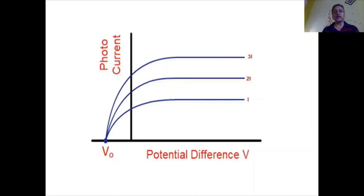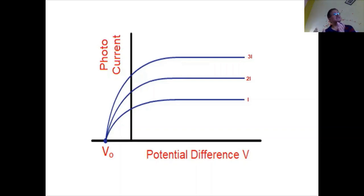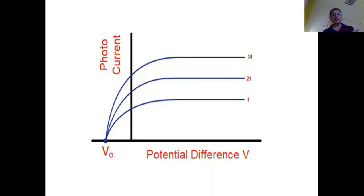Here is a graph between photocurrent and potential difference. Initially, even if the potential difference is zero, there is some photocurrent present. This is because when electrons are ejected from the metal surface, some electrons may have T maximum sufficiently large — that is, h nu minus h nu naught is large enough — that they can reach the cathode by themselves and constitute a current. For the rest of the electrons that do not have sufficient energy, we need to give them extra energy by increasing the potential difference, and the photocurrent increases.